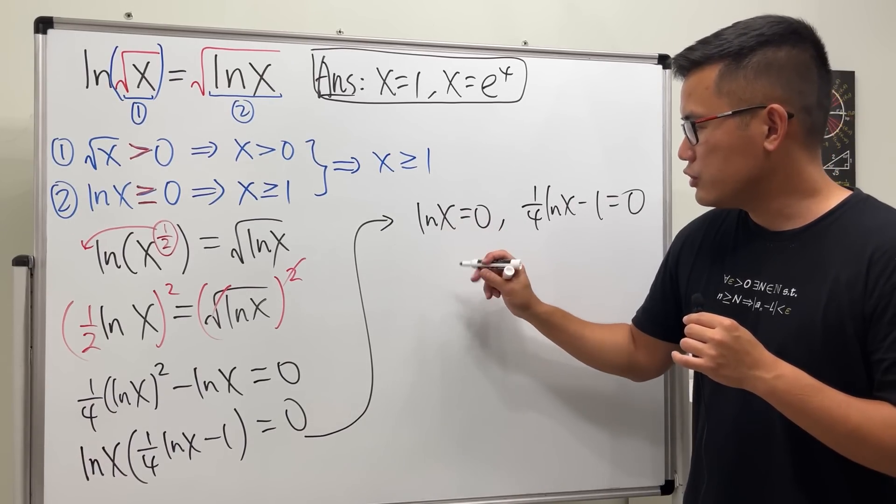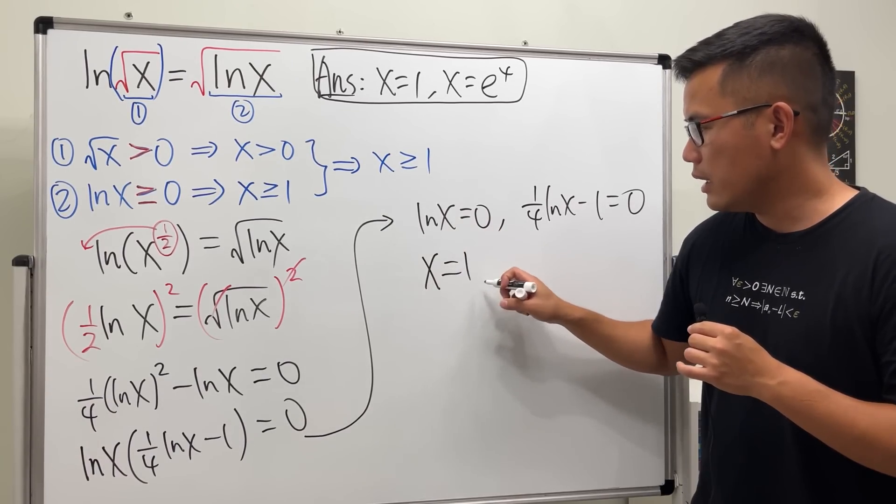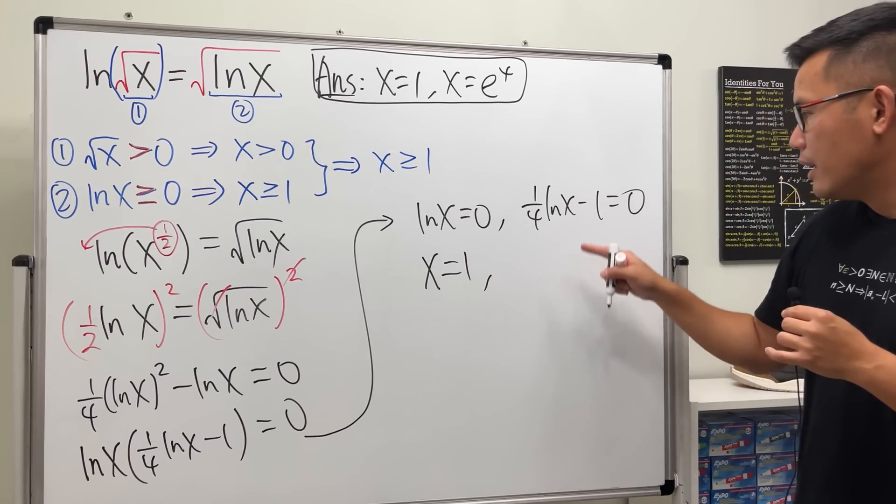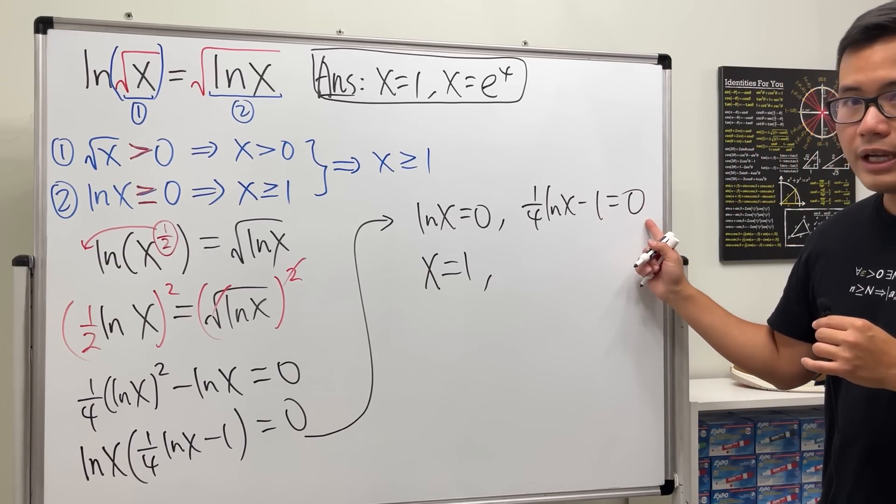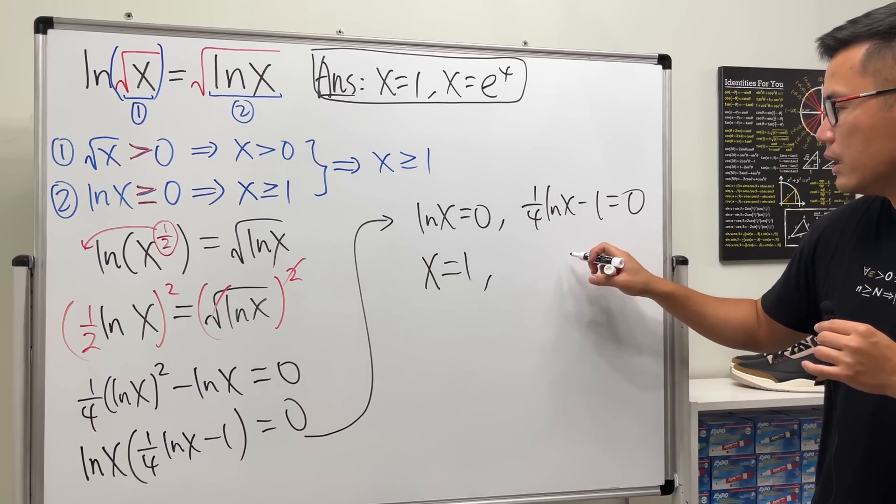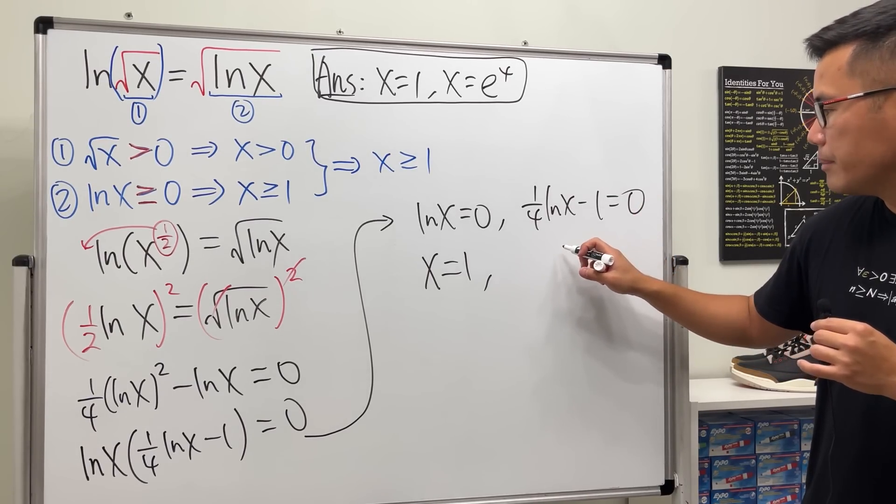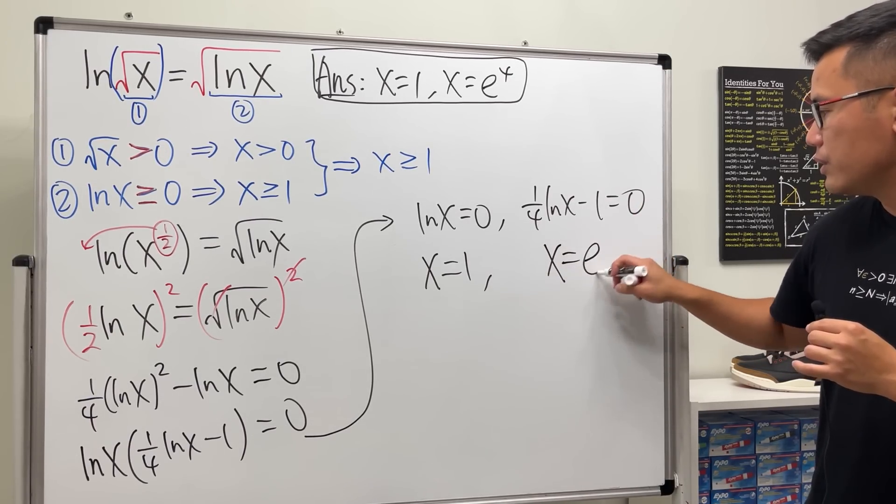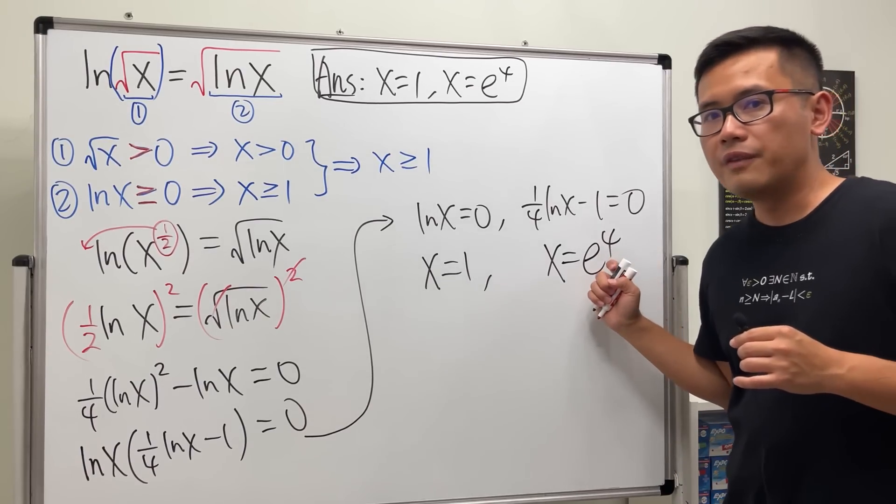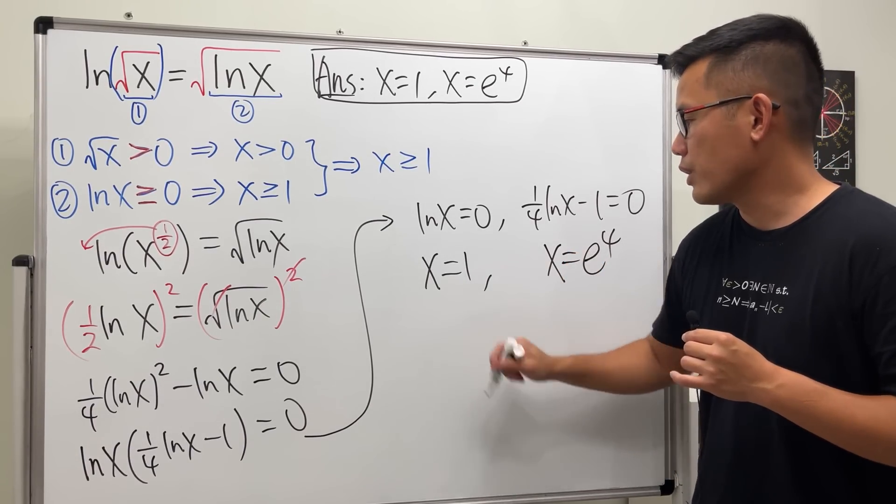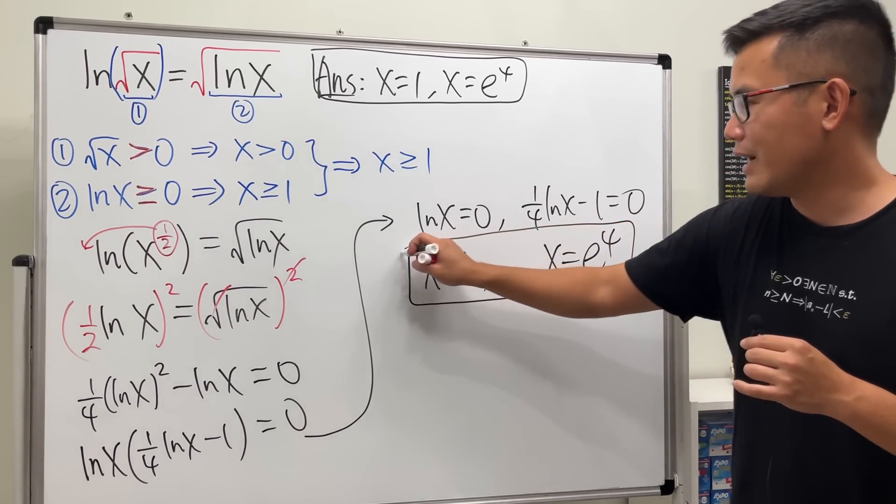To solve this equation, just exponentiate both sides, x is equal to 1, and it works. And to solve this, move the 1 to the other side, multiply both sides by 4, so ln x has to be equal to 4, and that means x has to be equal to e to the fourth power. It's definitely bigger than or equal to 1 as well. So therefore, here we have our answer. Pretty cool, huh?